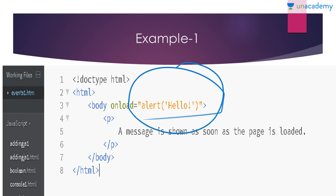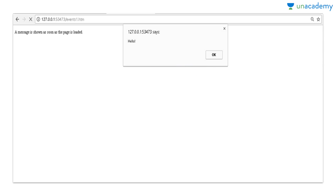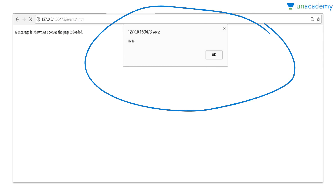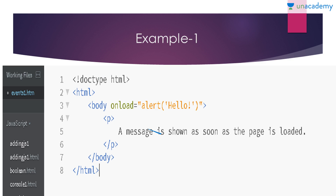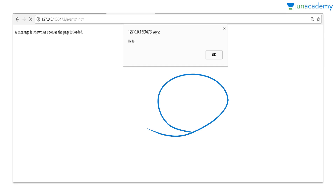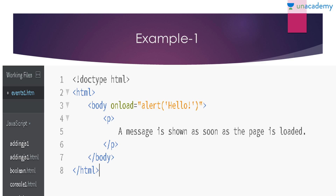The better way is to call a function — we can write a function and call it using the HTML event attribute. When you run the code in the browser, as soon as the page loads it will show the alert with the message 'hello', as we have written. In this way we use the HTML event and the JavaScript alert to perform some action.